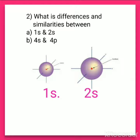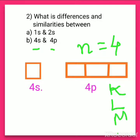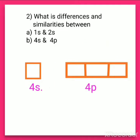Now let us find the difference between 4S and 4P. Since both have the principal quantum number 4, that is n = 4, that is one similarity — both 4S and 4P belong to the fourth orbit, the N shell, where the principal quantum number is equal to 4.